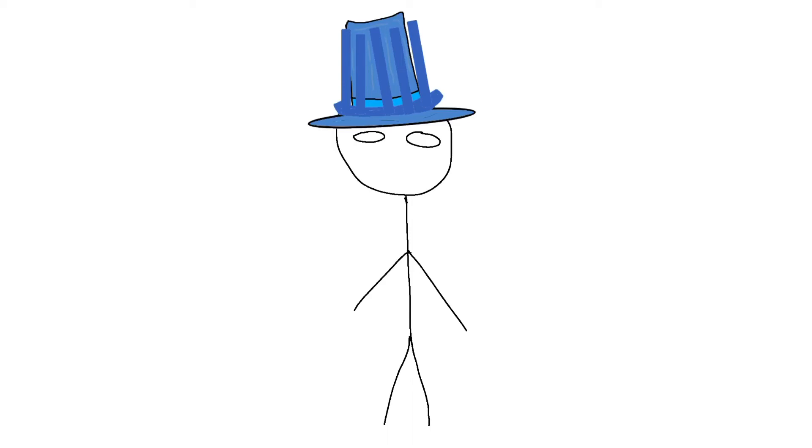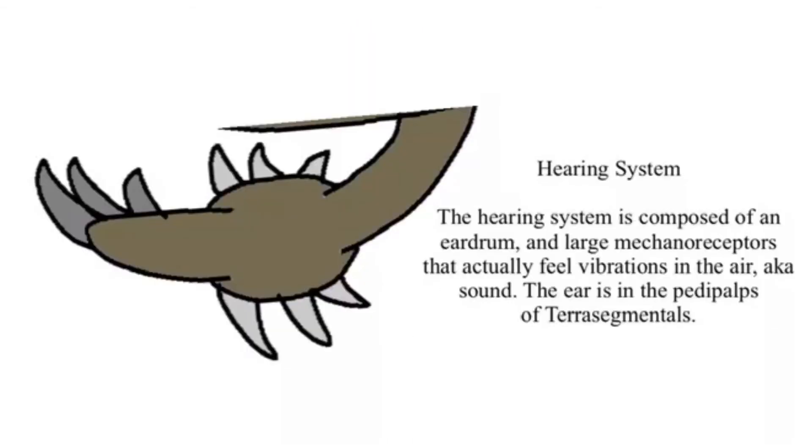Meanwhile, the mechanoreceptors on the base of the pedipalps of these creatures might become the first hearing system, consisting of an eardrum and some passages that connect to it, allowing them to perceive sound. Their mechanoreceptors might also shrink and become hair cells similar to that found in the ears of vertebrates.